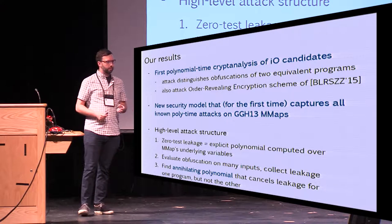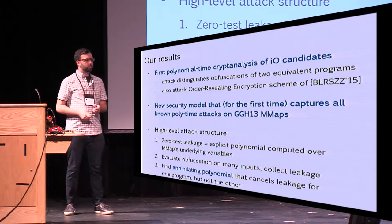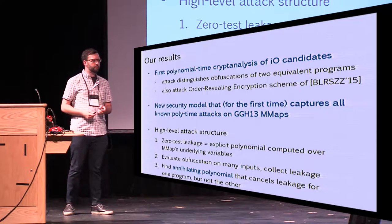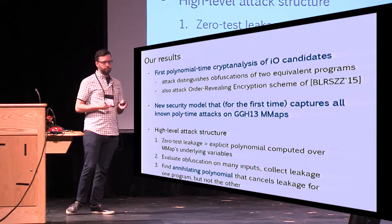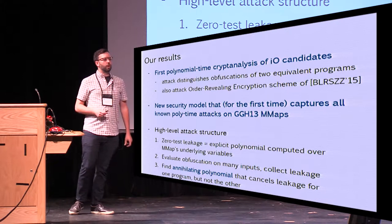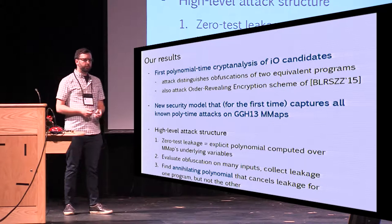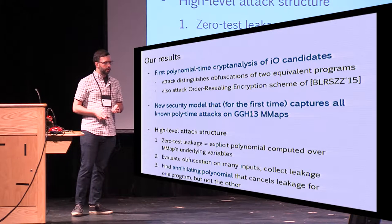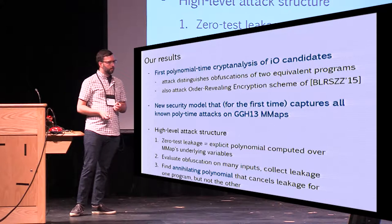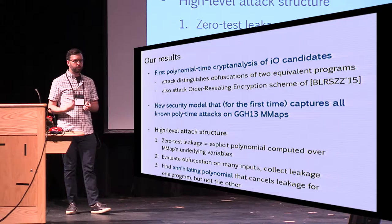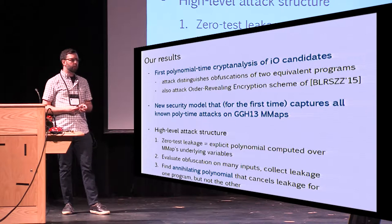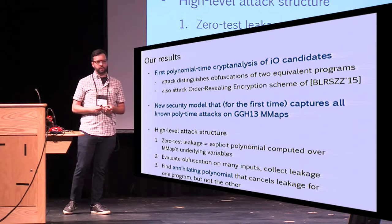Let me tell you what our results in this paper are. We give the first polynomial-time cryptanalysis of several IO candidates. This is a distinguishing attack — we produce two equivalent programs and show how to distinguish their obfuscations. In this paper, we also have an attack on the order-revealing encryption scheme due to Bonet et al., though I'm not going to go into those details because it's very similar to the attack on IO.